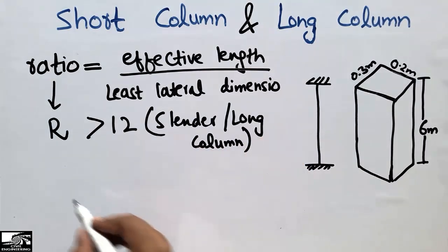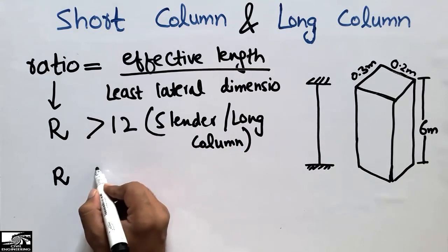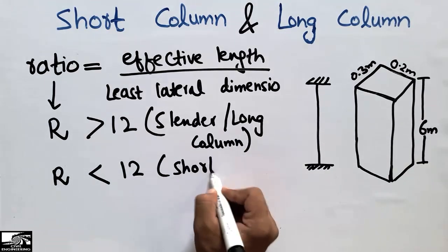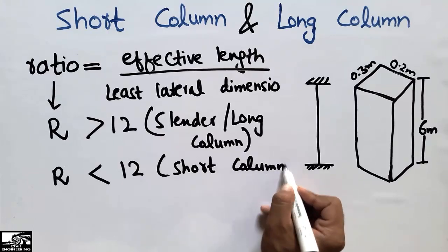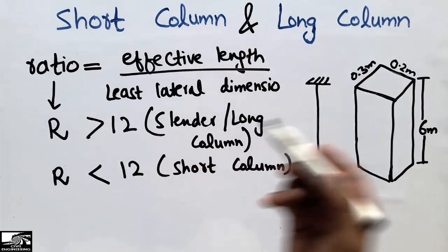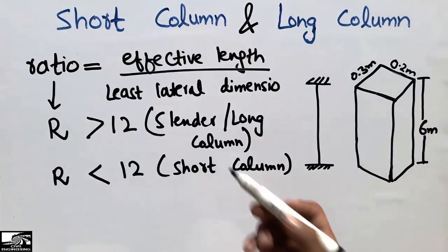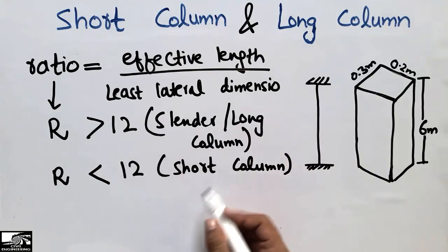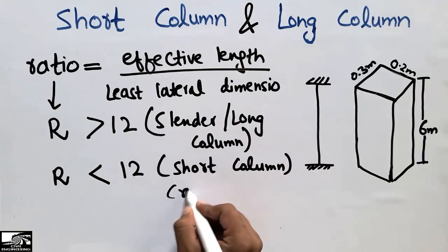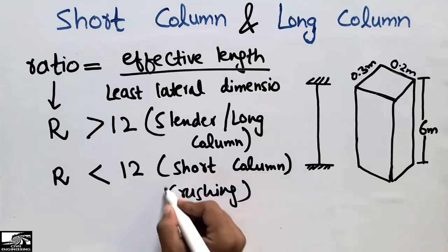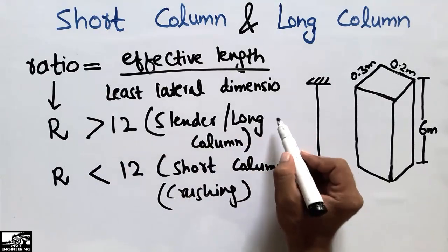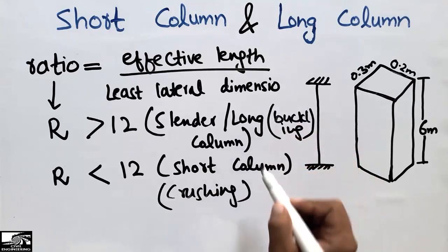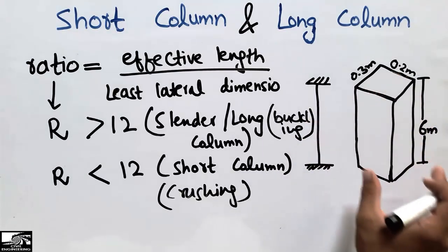When this ratio becomes less than 12, we call this type of column a short column. This is how we categorize between the short column and the long column. Generally, the long column fails by buckling, while the short column generally fails by crushing.